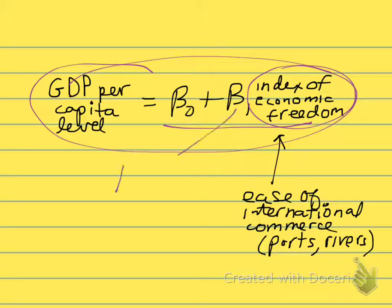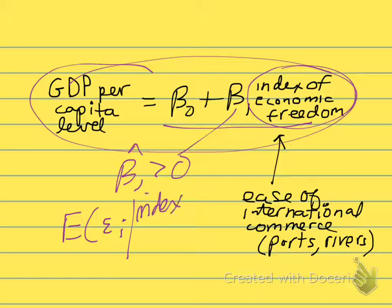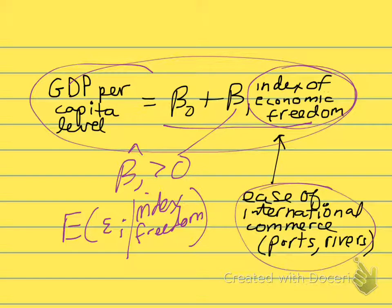How free are you to start up your own business, to buy property, to sell to anybody you please? These are commonly collected indicators of economic freedom or restrictiveness of carrying out entrepreneurial-type economic activity. We might imagine beta 1 hat is going to be positive. The more economic freedom, the higher GDP. But our assumption is that the expected value of our error term, conditional on the index, is equal to zero. That is, it's not correlated with other variables.